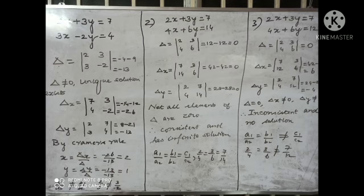In the graph, 2x plus 3y is equal to 7 and 3x minus 2y is equal to 4. That is the first case. You can draw straight lines. When the two straight lines intersect, the intersecting point gives x value 2, y value 1, that is the point (2,1). Two equations, one solution.